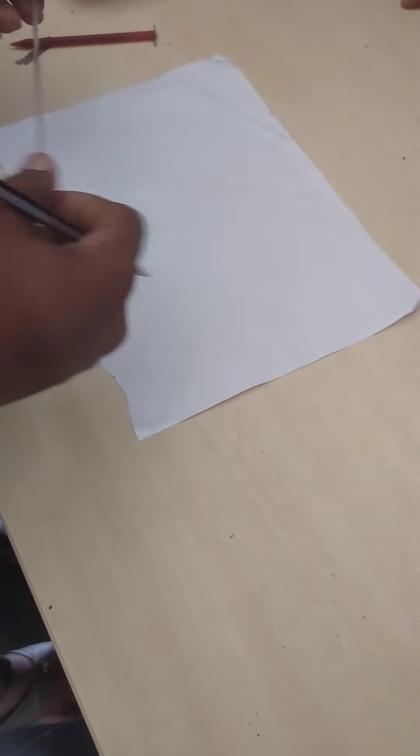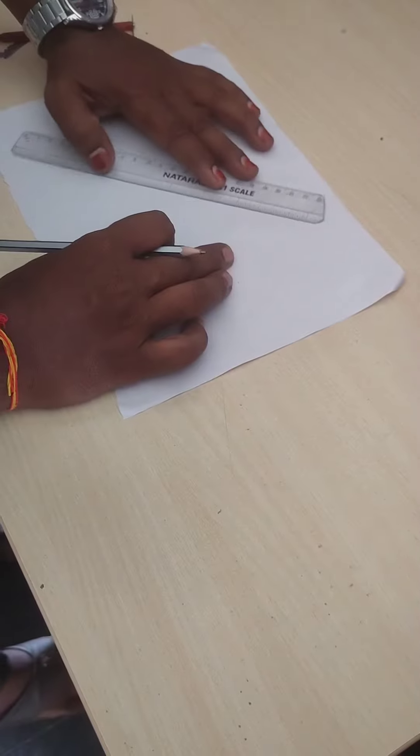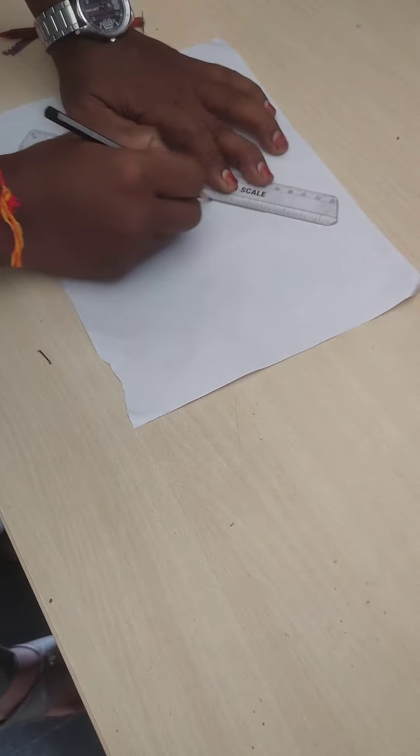Dear students, we are going to prove an exterior angle of a triangle is equal to sum of its interior opposite angles. First, let's draw a triangle.